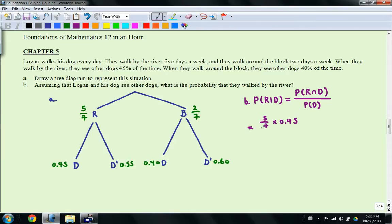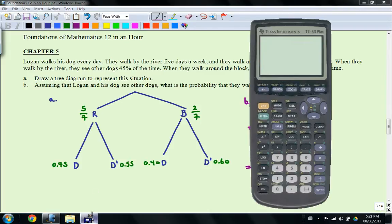So you're going to take 5 sevenths and multiply by 0.45. And what you're going to end up doing is you're going to divide by the probability of D which is this branch plus this branch. So it's a little bit more involved compared to the question that we did in class.